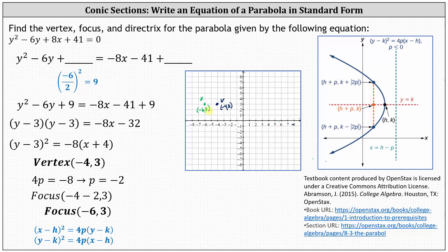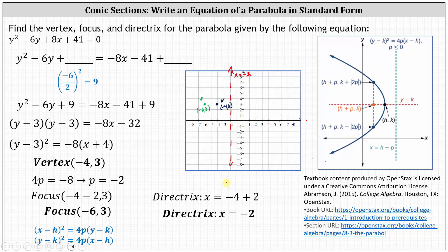We can now sketch the directrix, which is a vertical line 2 units to the right of the vertex. Since the vertex is negative 4 comma 3, the directrix is the vertical line x equals negative 2. More formally, to find the equation of the directrix, we add 2 to the x coordinate of the vertex: x equals negative 4 plus 2, giving us x equals negative 2.